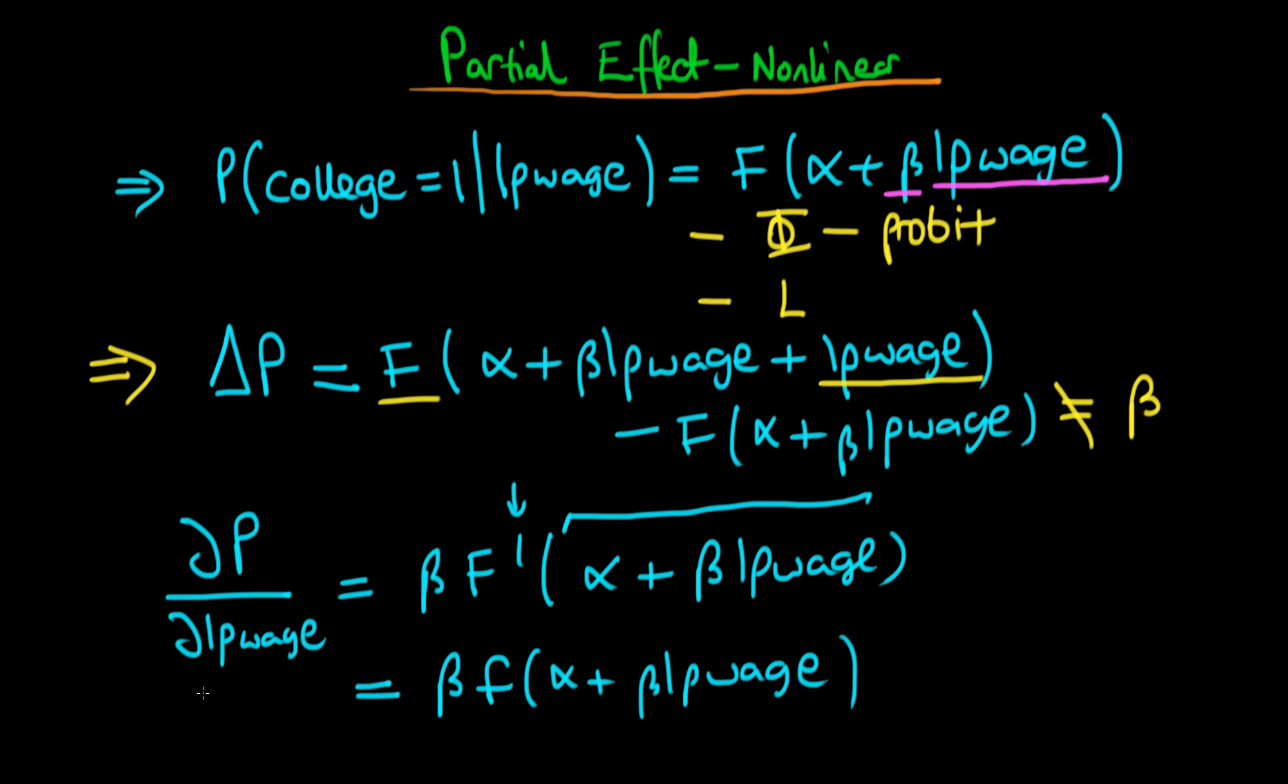So what is the effect of a one unit change in the log of parental wage? Well, it changes. It depends on beta, as it did before, but we've also got it as being a function of alpha plus beta times the log of parental wage. So it actually depends also on the log of parental wage. It depends whether you're talking about small incomes or higher incomes. The effect of a one unit change in that variable varies in terms of its effect on probability.